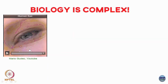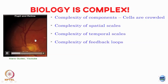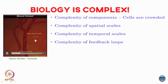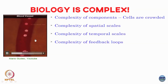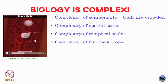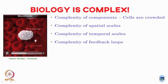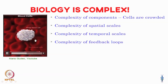The thing about biology which makes it challenging is that it is sort of complicated, and it is complicated at various different levels. One is that there is a complexity of components. When we look at textbook pictures of biological cells we see very clean images, but the reality is very far from that — biology is not clean at all; cells are extremely crowded environments.